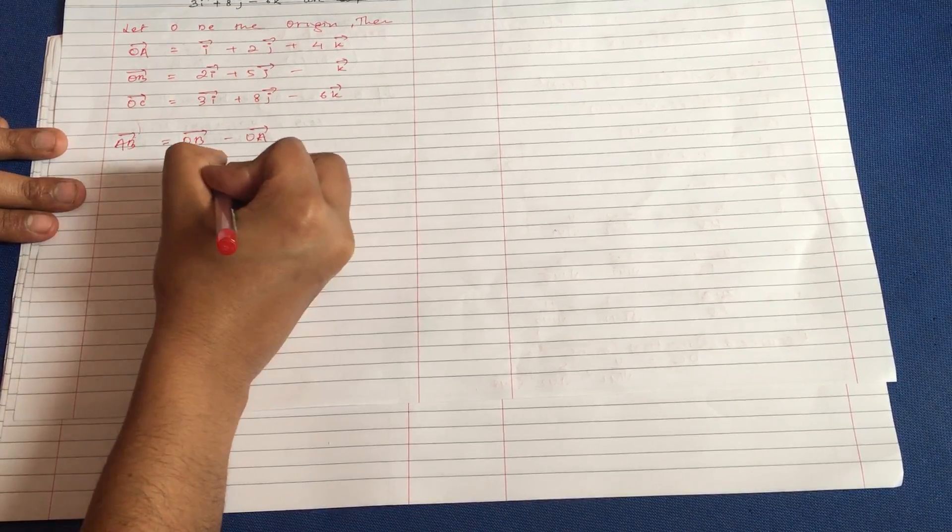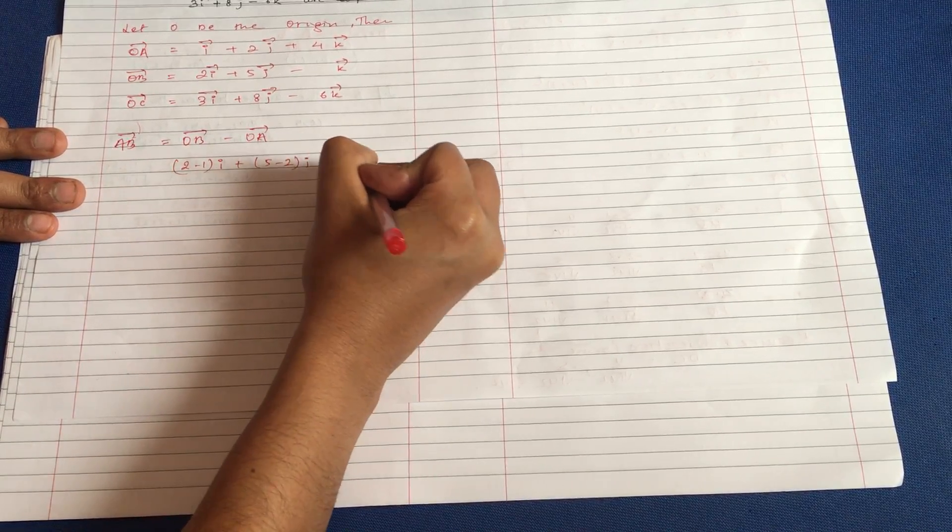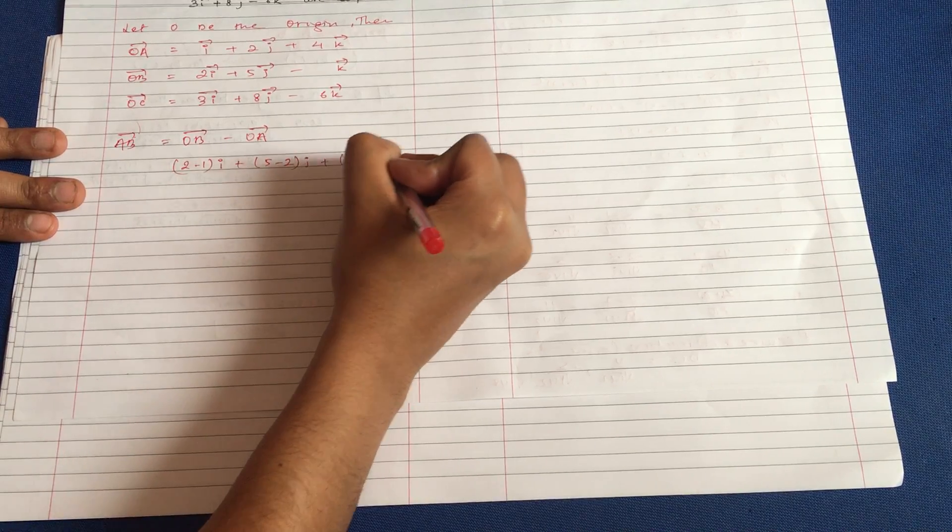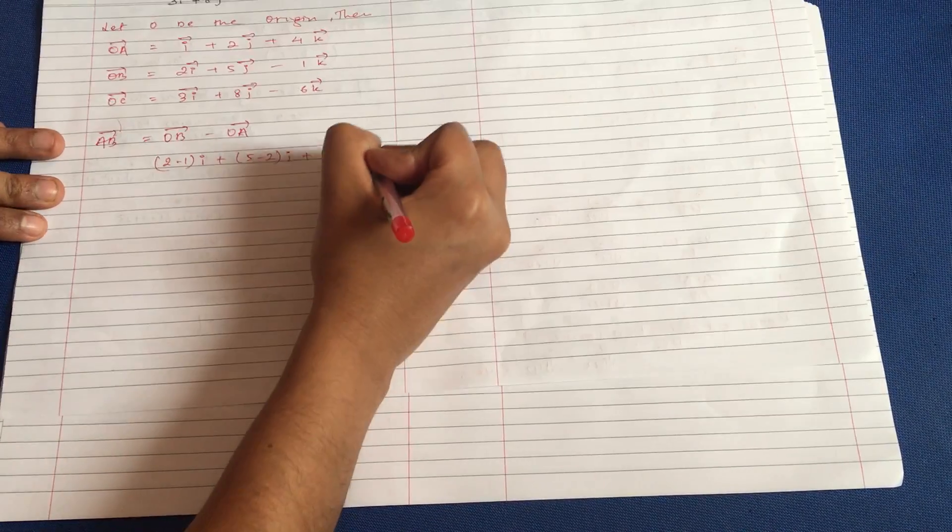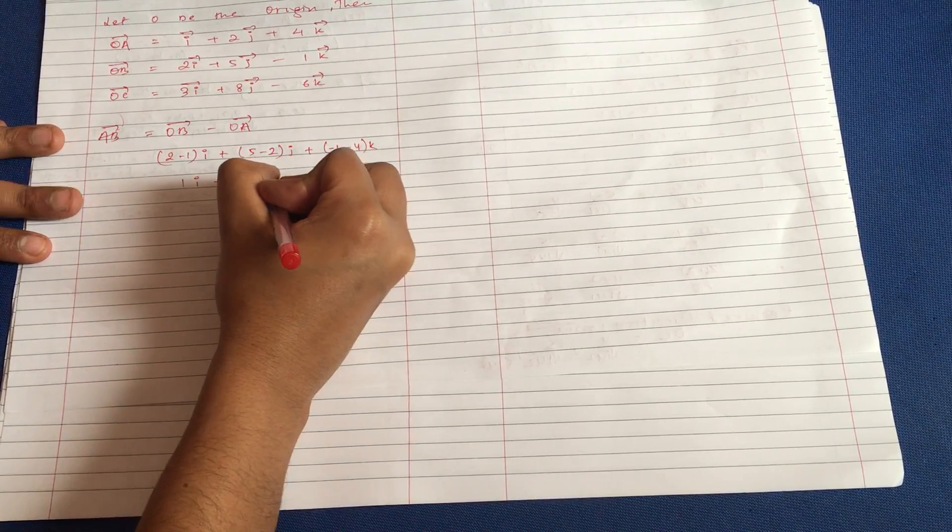minus 1i plus 5 minus 2j plus the k components, this is 1i plus 3j minus 5k.